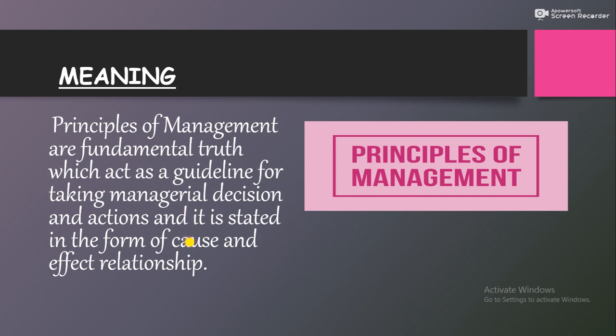اور یہ جو managerial decisions managers لیں گے، ان کے بیچ میں ہمیشہ cause and effect کی relationship ہوگی۔ Cause and effect کی relationship کا مطلب ہے کہ اگر ایک particular situation میں آپ ایک particular principle implement کرتے ہو، تو managers کو پہلے سے ہی پتہ لگ جائے گا کہ اس situation میں جو principle implement کرنے جا رہے ہیں اس کے کیا results future میں ملیں گے۔ اسی base پہ managers actions کرتے ہیں، general decisions لیتے ہیں، policies بناتے ہیں۔